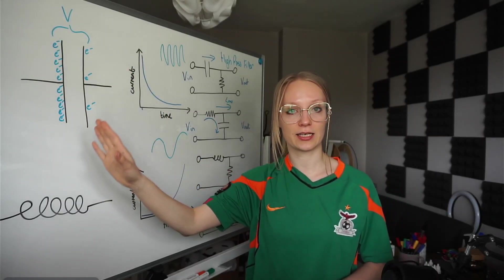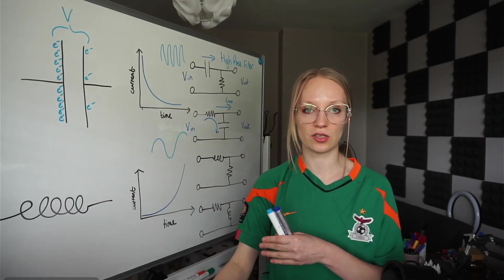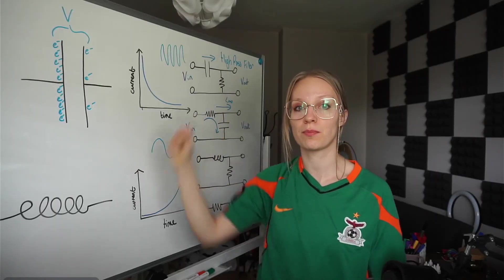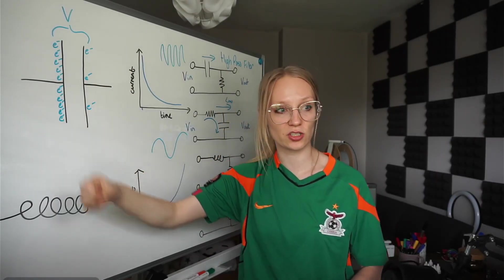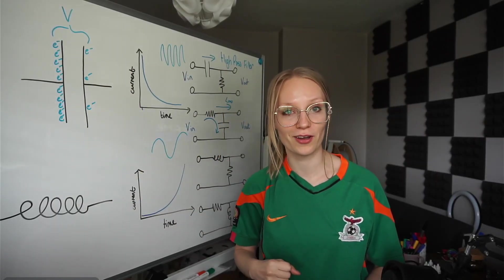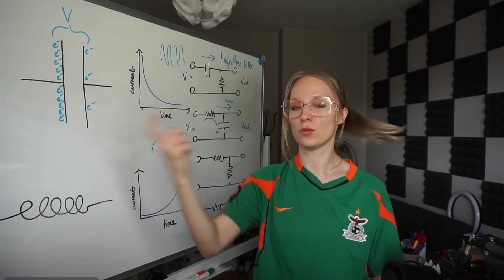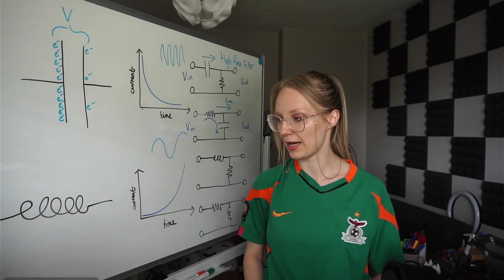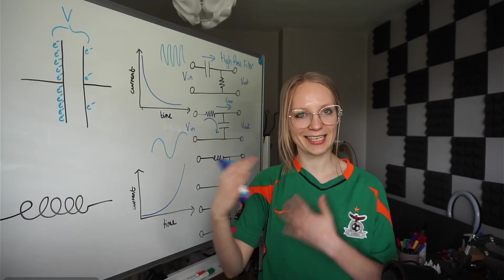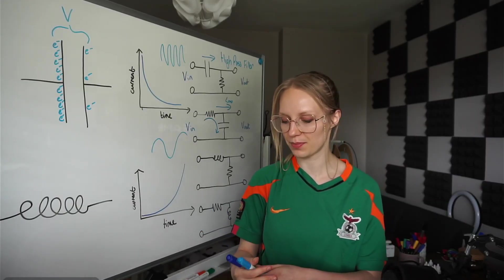So earlier I said a capacitor is two plates, there's electrons on either side. You extract all the electrons from one side, put them all in the other, buildup of electrons here, not a lot of buildup here, the opposite, and you build up a big voltage potential. An inductor is a little bit different. In fact, it's the exact opposite.